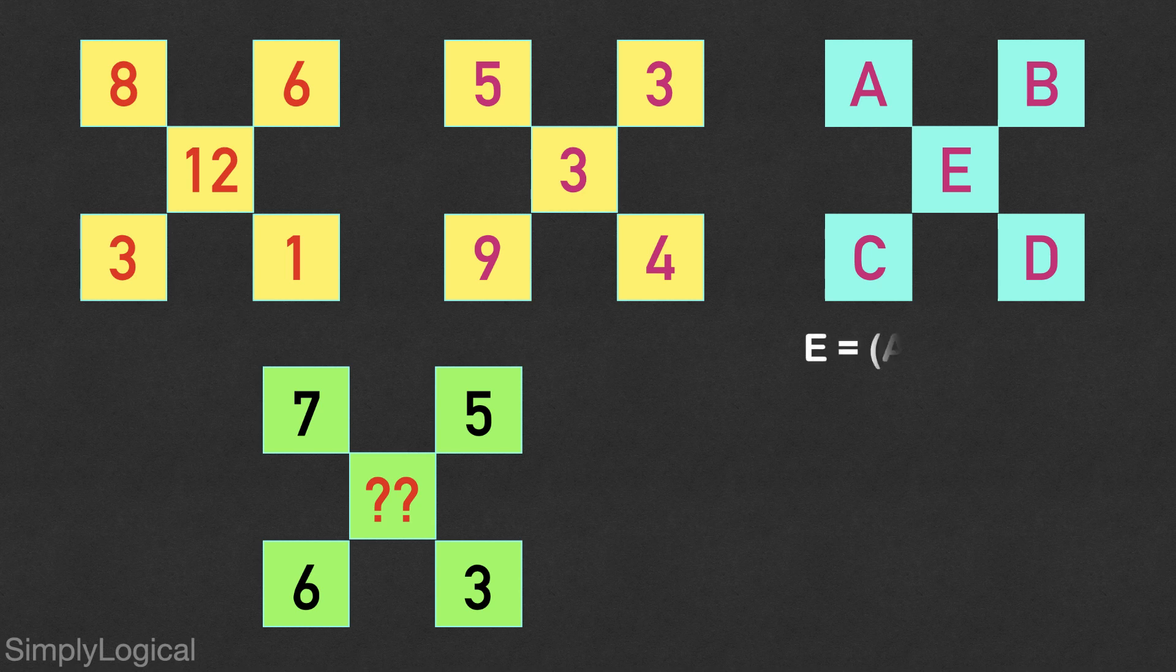Number E is obtained by using the logic A plus B minus of C minus D. Let's check that this logic holds correct.